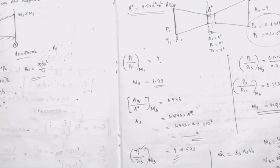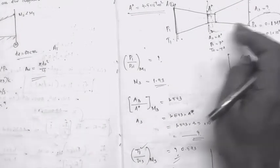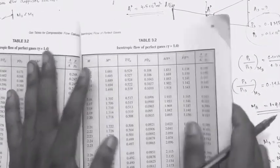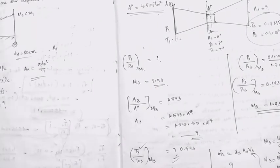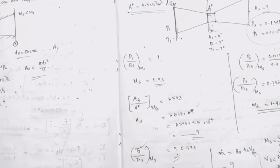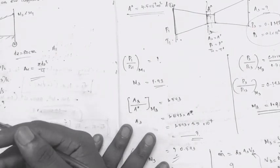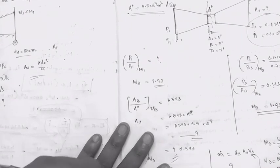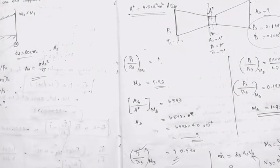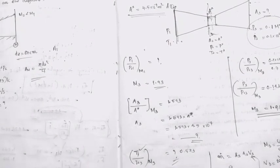Now we can find the exit mass flow rate using the data we have computed. This concludes the first part of the problem. In this class, we will next start with Fanno flow and Rayleigh flow. We can use different compressible flow models; if we start with Fanno flow, the Rayleigh flow analysis will follow.